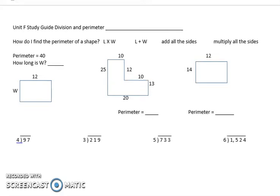Here are the answers to the division and perimeter study guide for unit F. How to find the perimeter of a shape? Perimeter means the distance all the way around, so the only way I can go all the way around is I'm going to add all the sides.